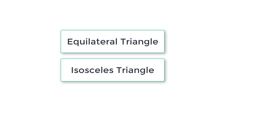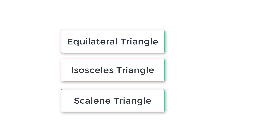A triangle is called a scalene triangle if all three sides are different or not equal. If three sides of the triangle have different lengths then it is a scalene triangle. Based on user input we will output what type of triangle it is.